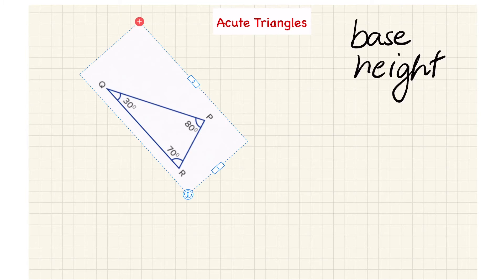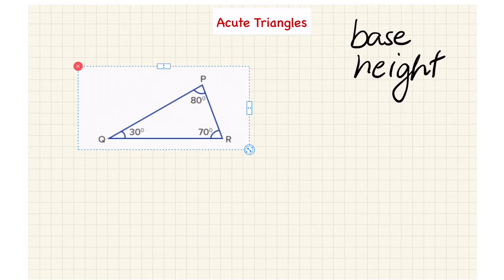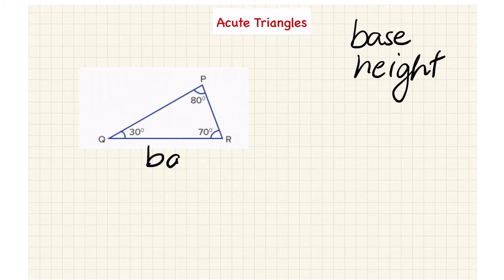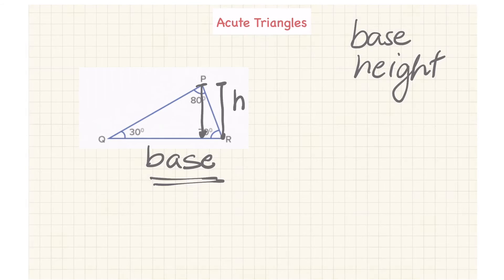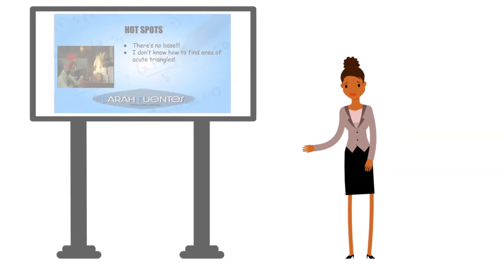For this type of problem, we just have to look at it, and even though we know we have to find the base and the height, our first problem is this triangle doesn't seem to have one. So why don't we just change our perspective — remember, we can just rotate the page and move it around. As long as you can move the page around, you can identify a base, and as long as you have a base, you're going to be able to find a height. We take the lowest point to the highest point to find the height.